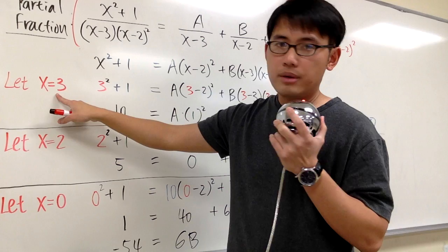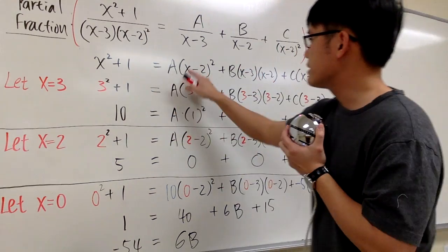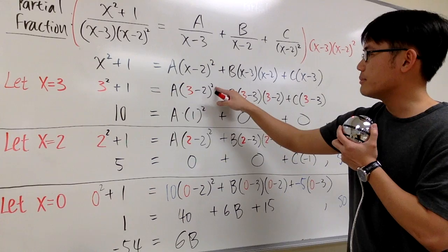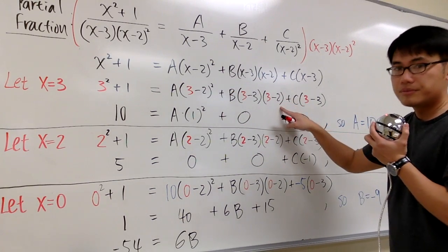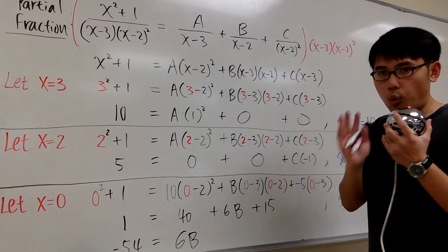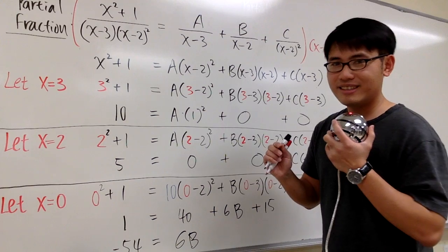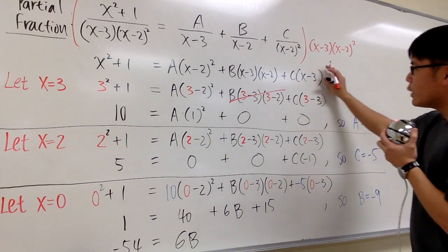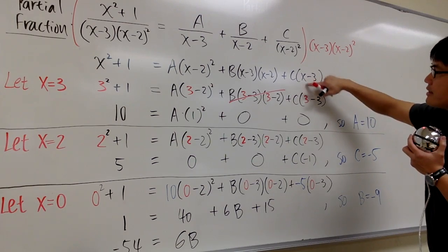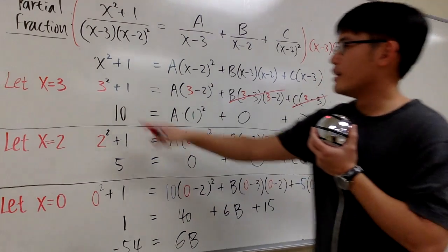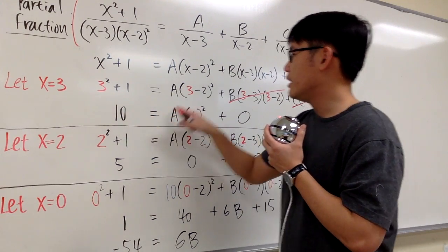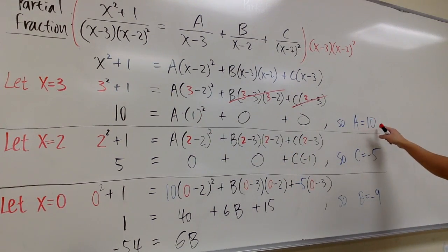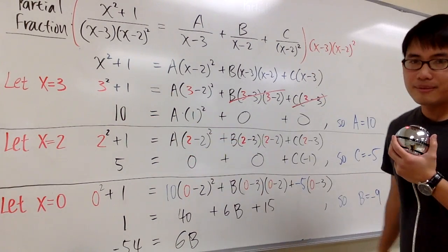Let's pick x equal to 3 and plug it into all the x we see. So we get 3 squared plus 1 equals a times 3 minus 2 to the second power, plus b times 3 minus 3 times 3 minus 2, plus c times 3 minus 3. When x equals 3, the middle term has a factor of 3 minus 3, which is 0, and the last term c times 3 minus 3 is also 0. So we get 10 equals a times 1 squared, which is just a. Therefore a equals 10.